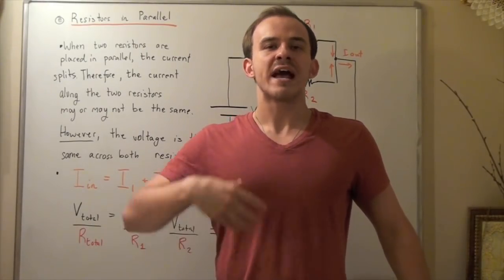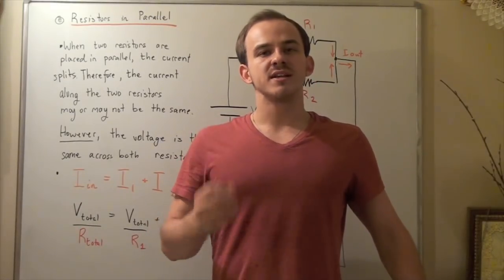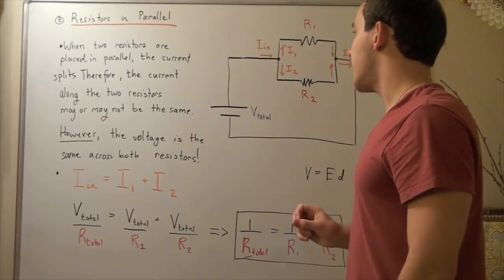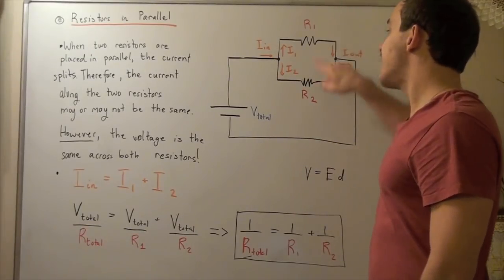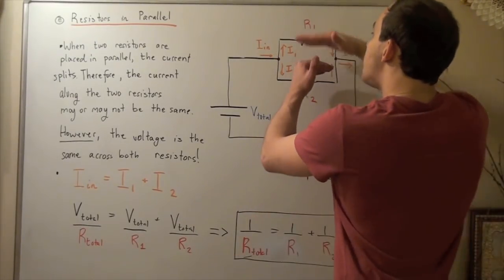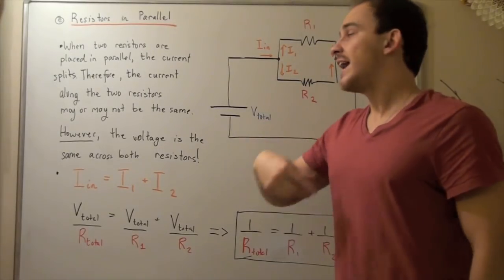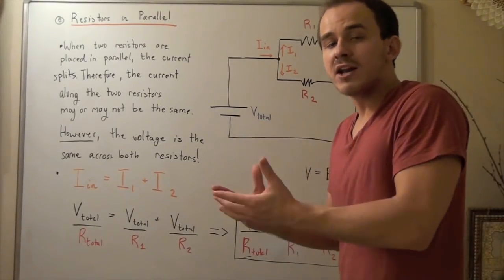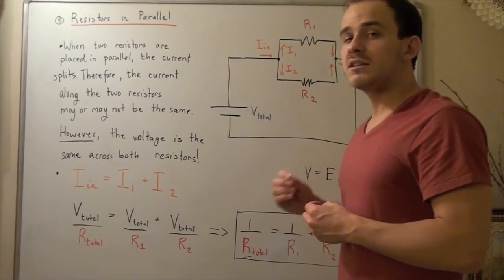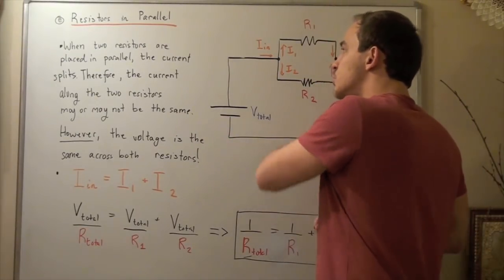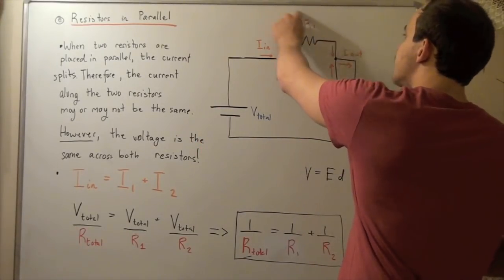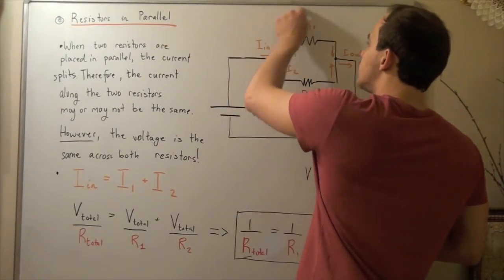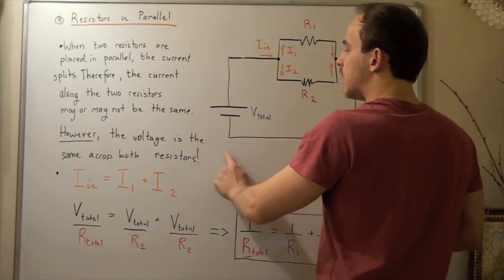Now let's examine how to calculate our total resistance when we place our resistors in parallel to one another. In this circuit, we have two resistors, R1 and R2, placed in parallel — across from one another — and one battery with a voltage or electromotive force of V total. This battery propels our electrons forward, allowing them to flow from the anode to our cathode. Our electron flow is in this direction, and by convention our current flow is in the opposite direction, going from cathode to anode.